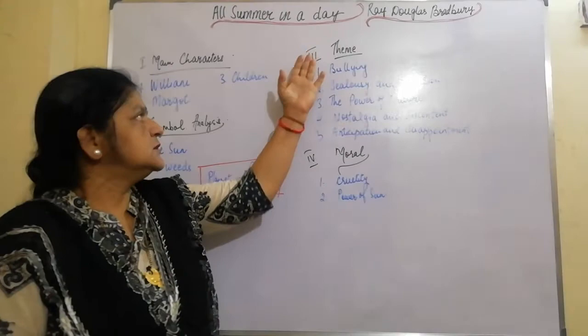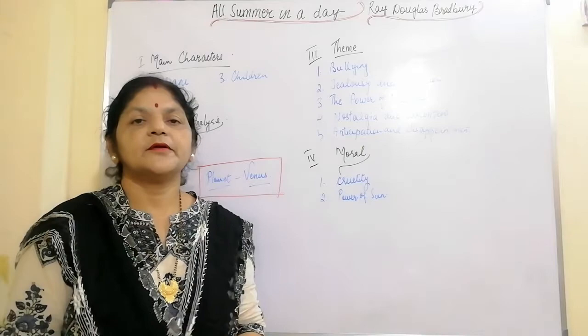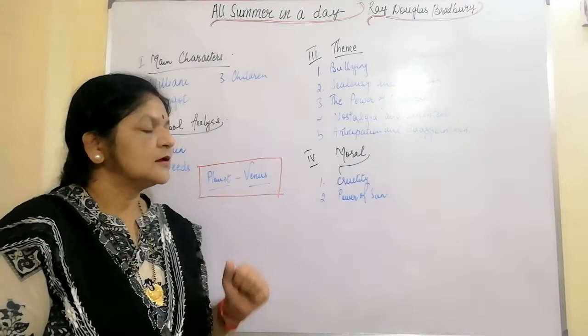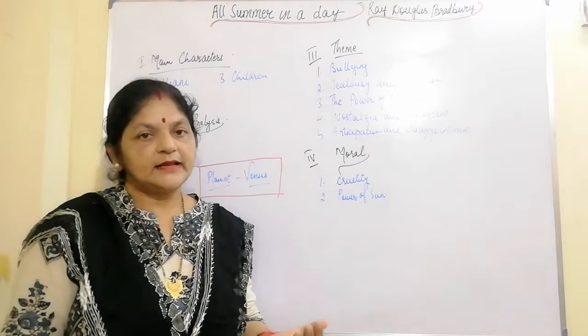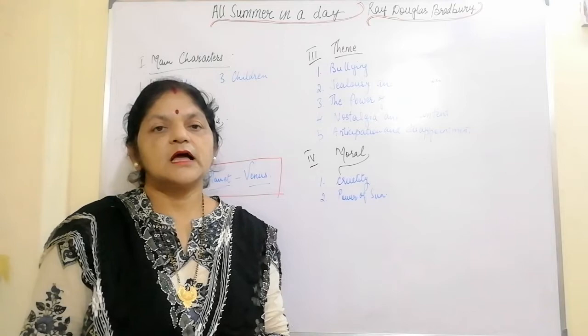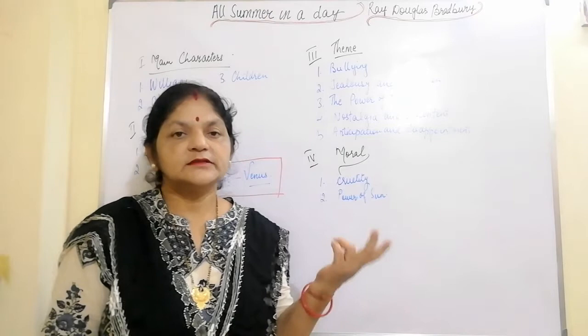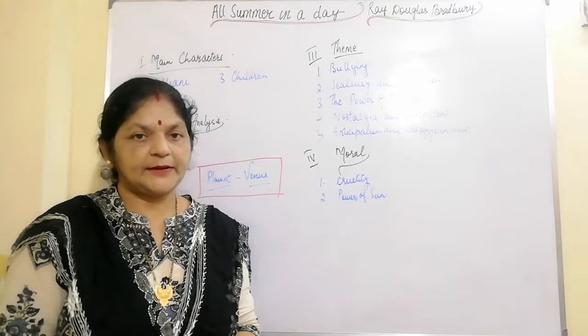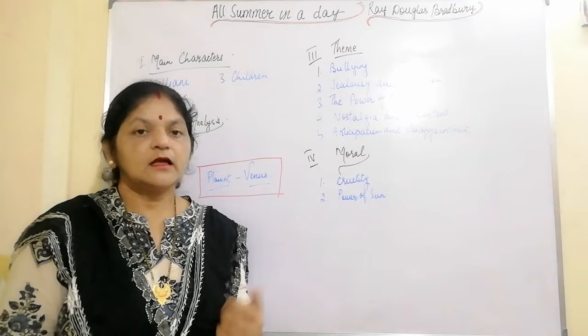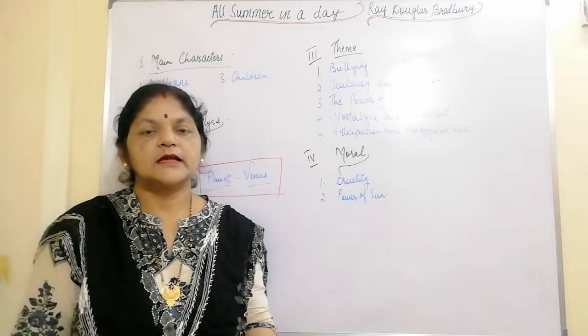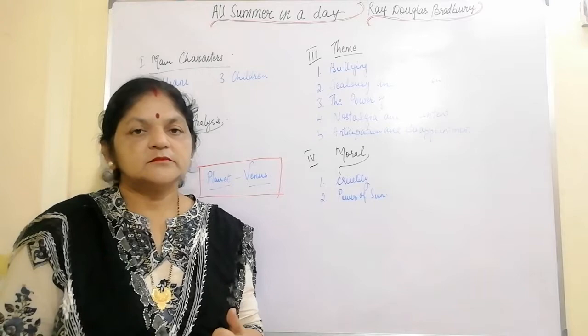'All Summer in a Day' takes place on the planet Venus. Venus has a peculiar climate: every seven years the sun comes out just for two hours. While on Earth we can see the sun every day — rising in the morning and setting in the evening — on the planet Venus it rains all day and every day. The planet is covered with thick jungles and unruly weeds, perpetually caught in a cycle of growth and destruction. Human life exists underground in a network of tunnels, eagerly awaiting a very brief summer.